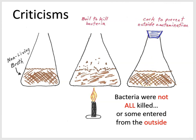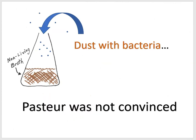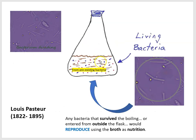So Pasteur had lots of criticisms of these earlier experiments. What he thought was going on was either the boiling process was not sufficient, or dust with bacteria hitching a ride was entering the flask and colonizing the fluid. Once living cells got into the broth, they would use the broth as nutrition, they would reproduce — and that's why you would find bacteria in the broth.